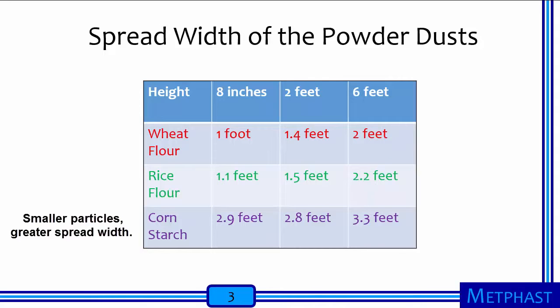Also, dropping the powders from greater height led to greater spreads. This is because the force of impaction of each powder is greater as the drop height increases. The increased energy imparted to the powder by this impaction force causes the powder to move further through the air before settling due to gravity. So, for the same amount of applied force, smaller particles will be able to move through the air farther than larger particles.